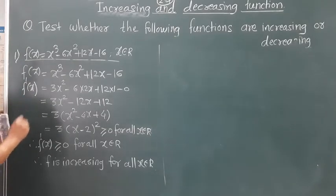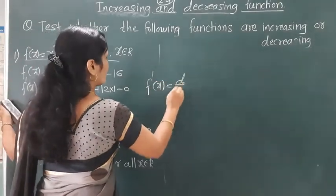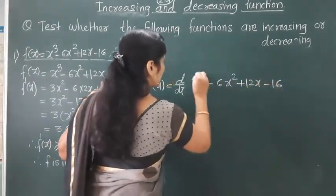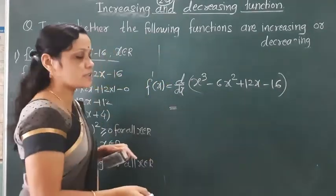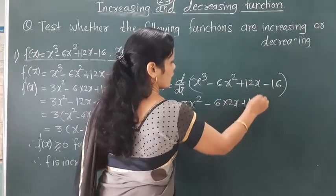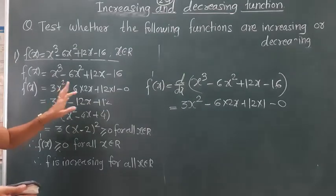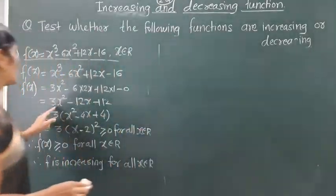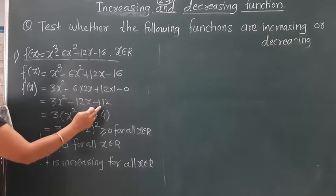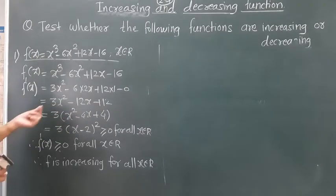To check if the function is increasing, we differentiate f(x) = x³ - 6x² + 2x - 16. The derivative is f'(x) = 3x² - 12x + 2. We simplify this expression to determine the sign of f'(x).